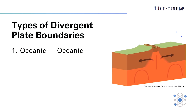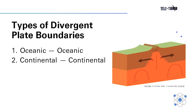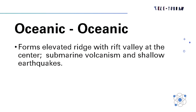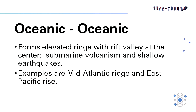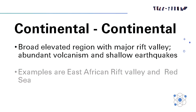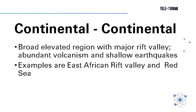There are two types of divergent plate boundaries: oceanic to oceanic and continental to continental. Oceanic to oceanic forms an elevated ridge with a rift valley at the center, submarine volcanism, and shallow earthquakes. Examples are the Mid-Atlantic Ridge and East Pacific Rise. Continental to continental is a broad elevated region with a major rift valley, abundant volcanism, and shallow earthquakes. Examples are the East African Rift Valley and the Red Sea.